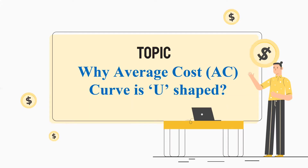We all know that in the beginning, the average cost curve is downward sloping. After reaching some point, it starts increasing. But what is the logic behind that? I'm going to explain the idea of average cost and then we move to the reasons behind the U-shaped average cost curve.